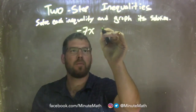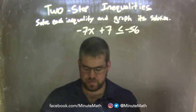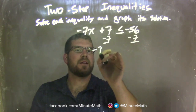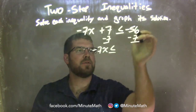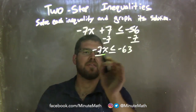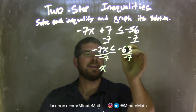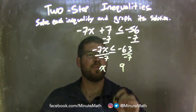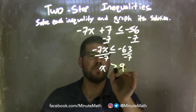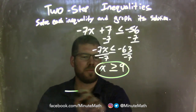Negative 7x plus 7 is less than or equal to negative 56. First step: subtract 7 from both sides. Now I'm left with negative 7x is less than or equal to negative 56 minus 7, which is negative 63. I then divide both sides by negative 7, leaving x by itself on the left, and negative 63 divided by negative 7 is positive 9 on the right. Since I divided by a negative over the inequality, the less than or equal to sign turns into a greater than or equal to sign.